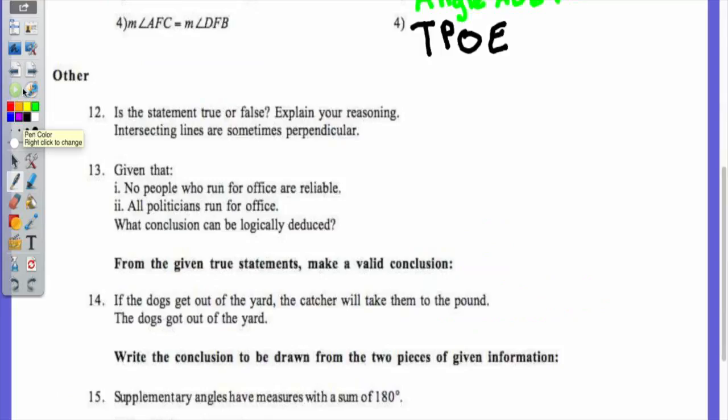Intersecting lines are sometimes perpendicular. Yes. True, because they can form a 90 degree angle, and they cannot form a 90 degree angle. So that's what you want to write. It's true. Sometimes they can form a 90 degree angle, and sometimes not.